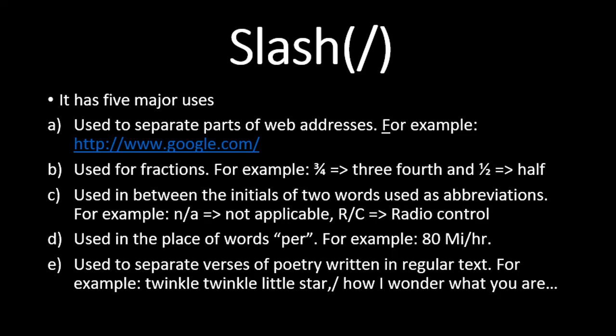The fifth use of slash is to separate the verses of poetry when written in regular text. Poetry is normally written with each verse on a new line, but if you are quoting a poem within a paragraph, you use a slash to separate one verse from the next. For example: 'Twinkle twinkle little star / How I wonder what you are.' These were the major uses of slash — though there are others, these are the most commonly used ones.